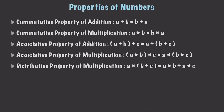First we're going to talk about some properties of numbers, and this is pretty basic stuff which you probably already know. The commutative property of addition just basically tells us that whenever we add values, it doesn't matter in which order we add them. So we can add 1 plus 5, and that's going to be equal to 6. Or we could add 5 plus 1, and that is also going to be equal to 6. And that is all you need to know about the commutative property of addition.